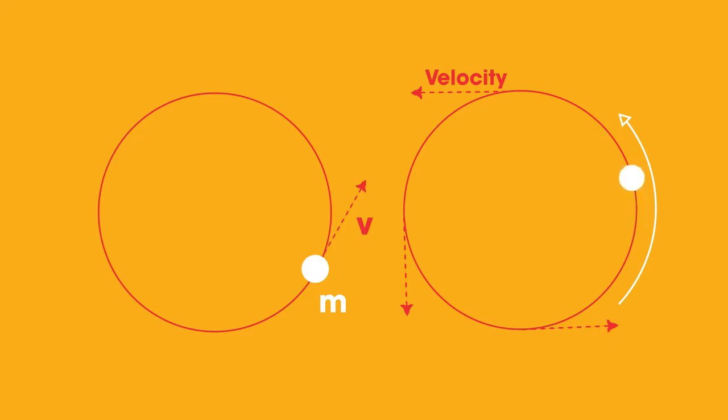At the same time, the mass is also accelerating towards the centre of the circle. But you may be wondering, why is the object accelerating when the speed remains constant?